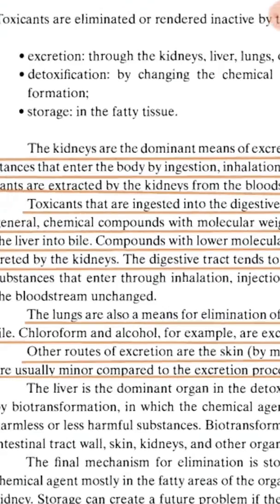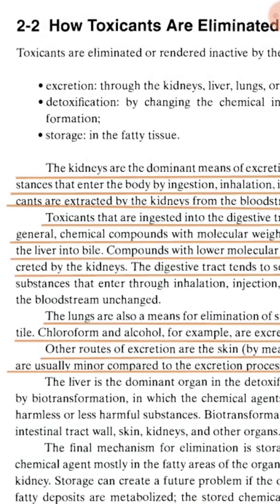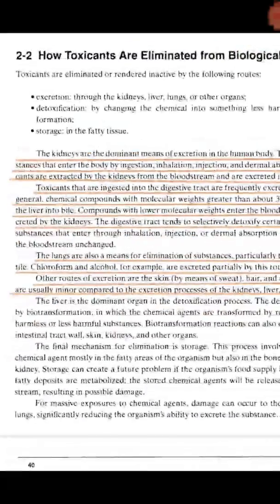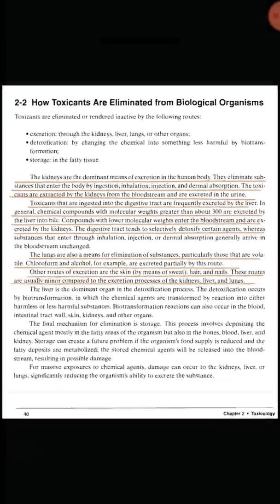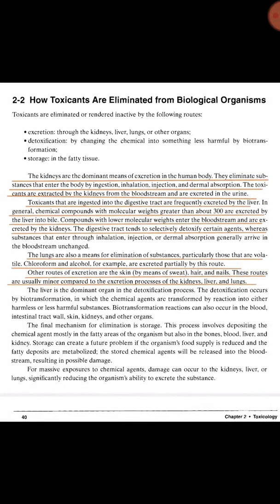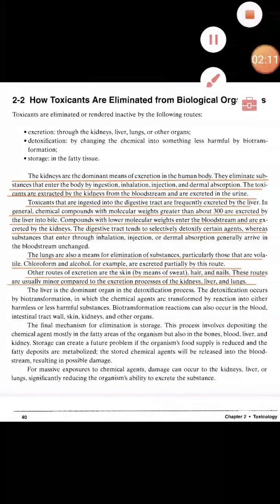The second process is also a natural process — detoxification. Here, the material is not excreted but transformed. Whatever material is present in the body, by a biotransformation process, it can be converted into a very less harmful material. The third process is storage, where unwanted materials present in the body can be converted into fatty acids. These are the three methods by which toxic material can be eliminated from the body.